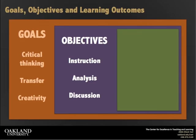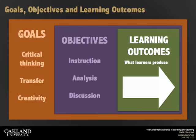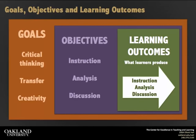If objectives are what an instructor puts into the course and plans for achieving the goals, the learning outcomes are what learners actually produce. They explain what students will be able to do because of the instruction, analysis, or discussion. Instructors assess student learning through these outcomes.